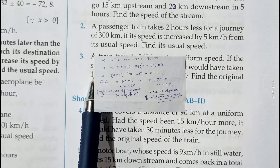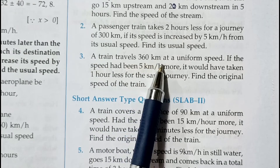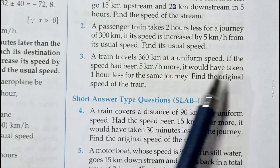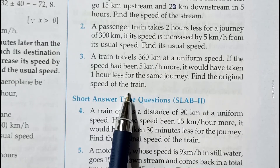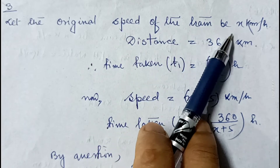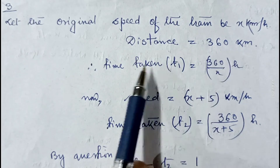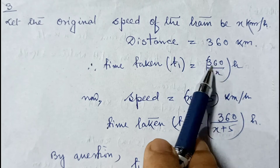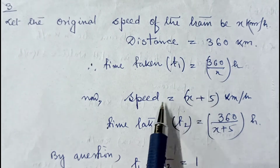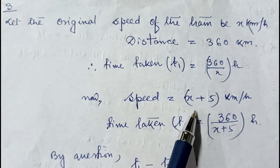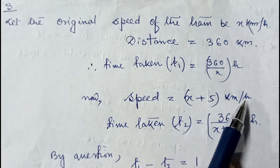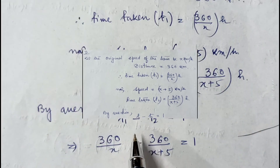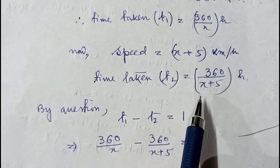Question number 3: A train travels 360 kilometer at uniform speed. If the speed had been 5 kilometer per hour more, it would have taken one hour less for the same journey. Find the original speed of the train. Let the original speed be x kilometer per hour. Distance is 360 km, so t1 = 360/x hours. New speed is x plus 5, so t2 = 360/(x plus 5) hours.